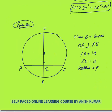Here is an example to make the concept clear. O is the center of the circle. OE is perpendicular to AB, AB is 12 cm, and ED (the smaller part) is 2 cm. We need to find the radius. Since perpendicular from center bisects the chord, AE = EB = 6 cm. Now apply the intersecting chords property: AB and CD are both chords intersecting at E.